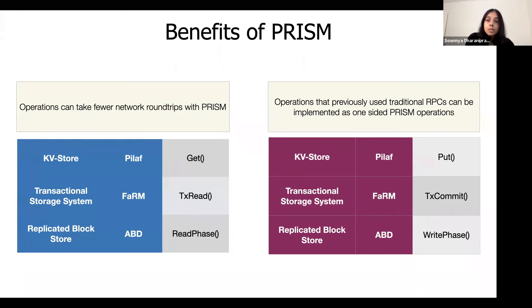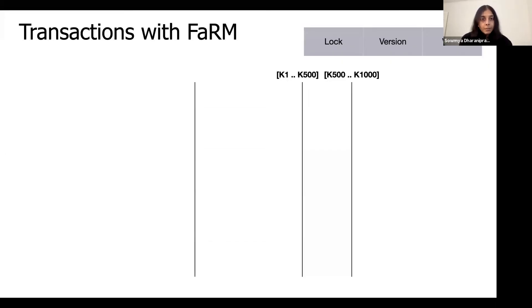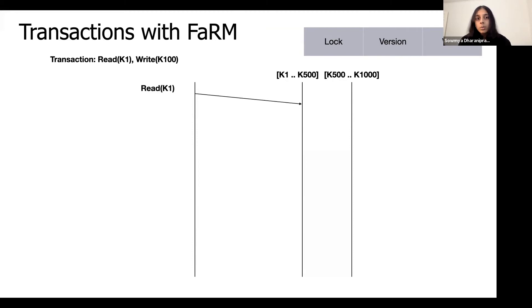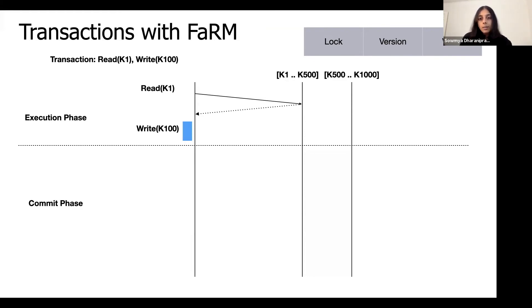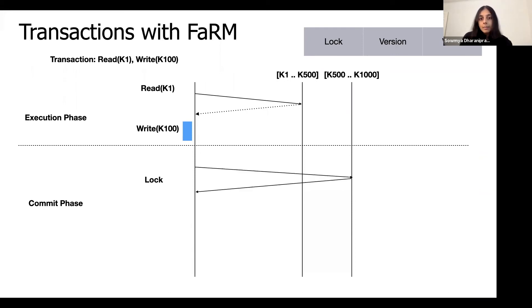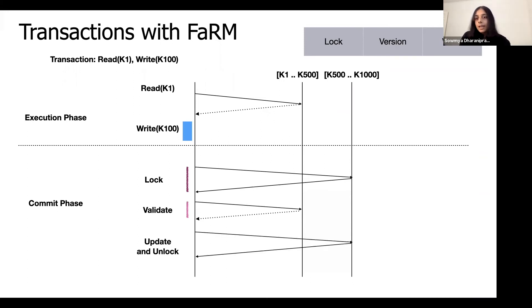Let's look at how PRISM can be used to improve transaction processing. FARM is a state-of-the-art transaction processing system over RDMA. Data is partitioned among multiple servers, and clients group their operations into transactions. During the execution phase, they either read or write data from different servers — reads use one-sided RDMA, and writes are buffered locally. After all operations finish, the transaction enters the commit phase. FARM uses a variant of two-phase commit with three broad phases: obtaining locks for the write set, validating the read set to ensure objects haven't changed, and finally applying updates and releasing all locks. The update and lock phases must use RPCs, but the read set can be validated using one-sided RDMA reads.